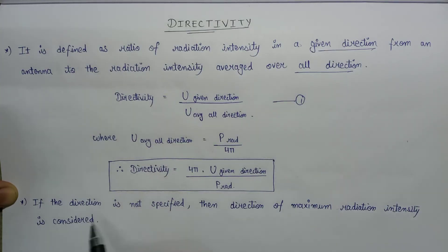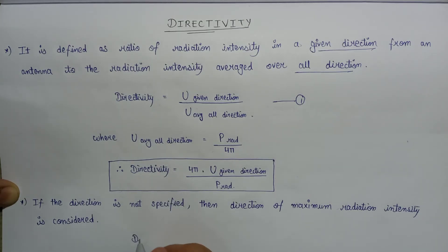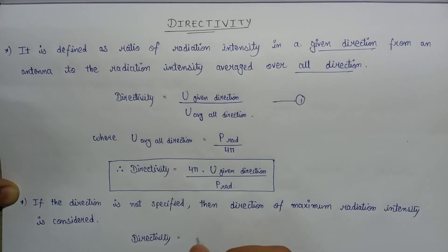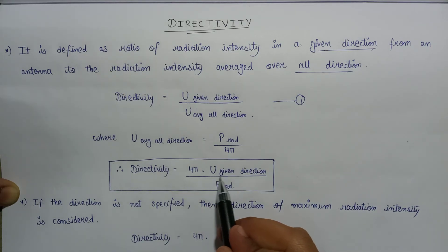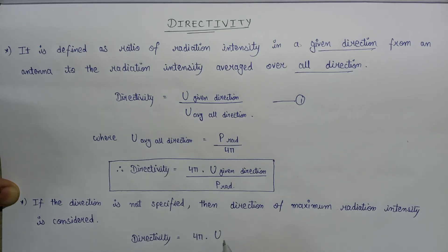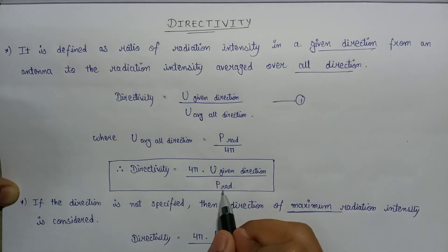When the direction is not specified, the directivity formula becomes: D = 4π × U_max / P_radiated, where U_max is the radiation intensity in the direction of maximum radiation.